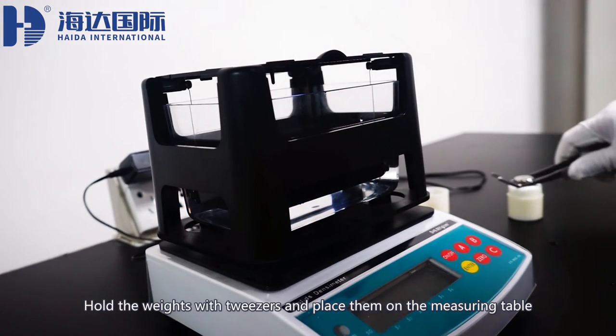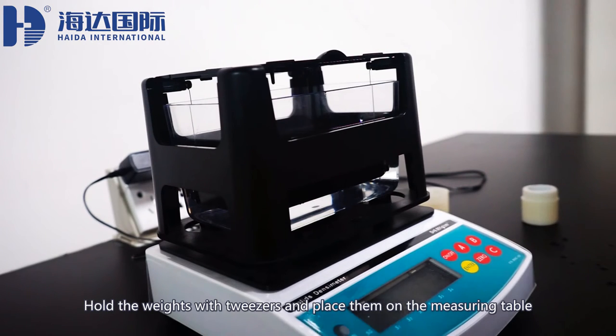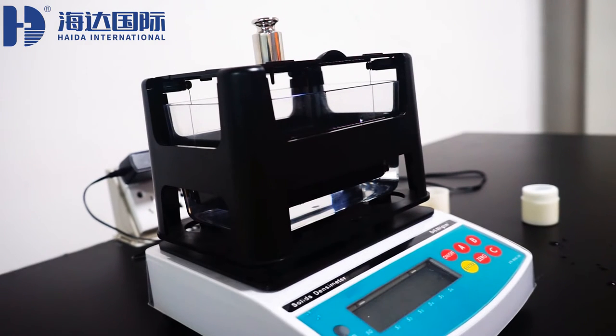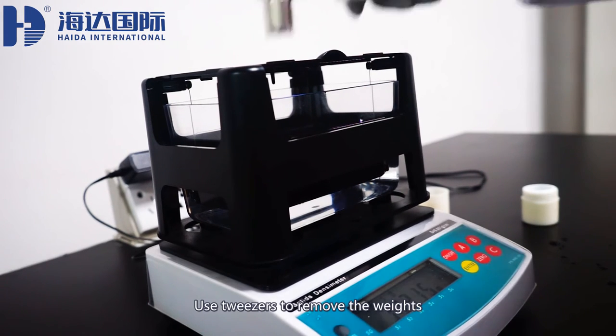Hold the weights with tweezers and place them on the measuring table. Wait for the instrument to show the reading, and use tweezers to remove the weights.